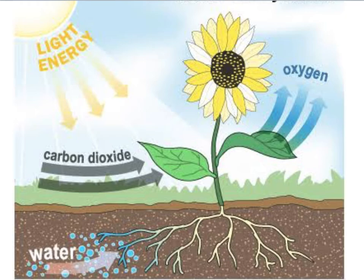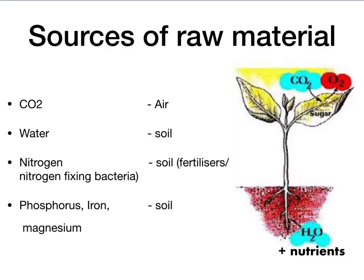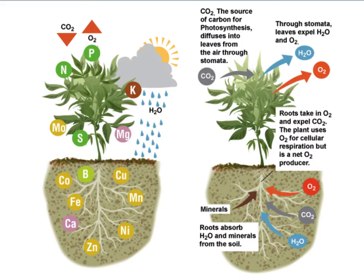We have seen in the previous part of this chapter how green plants, autotrophs, undergo photosynthesis utilizing the sun's energy and various raw materials to produce food. We also learned about the sources of these raw materials — how plants take simple inorganic compounds like carbon dioxide from air and synthesize food in leaves. Water is an essential ingredient obtained from soil, which is also the richest source of minerals like nitrogen, phosphorus, and potassium. These minerals are also taken up by plants dissolved in water.